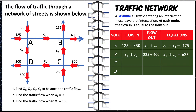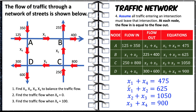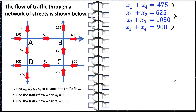For node C, the flow in is 800 plus 250, and the flow out is x2 plus x3. Equating these gives x2 plus x3 equals 1050. For node D, the flow in is x3 plus x4, and the flow out is 300 plus 600. Equating these gives x3 plus x4 equals 900. We now have four equations in four unknowns, one corresponding to each of the four nodes, and this is the system of equations we are going to solve to find x1, x2, x3, and x4.